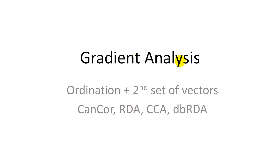Our next unit covers gradient analysis, and that requires two data sets. The naming comes from environmental gradients explaining some biological response variables, but they don't need to be environmental gradients explaining biological data. There can be any two types of data sets where you would like to establish associations between them. What we cover here is direct and indirect gradient analysis, which means you start with an ordination just like we've done before, and then you add a second set of vectors based on your second data set.